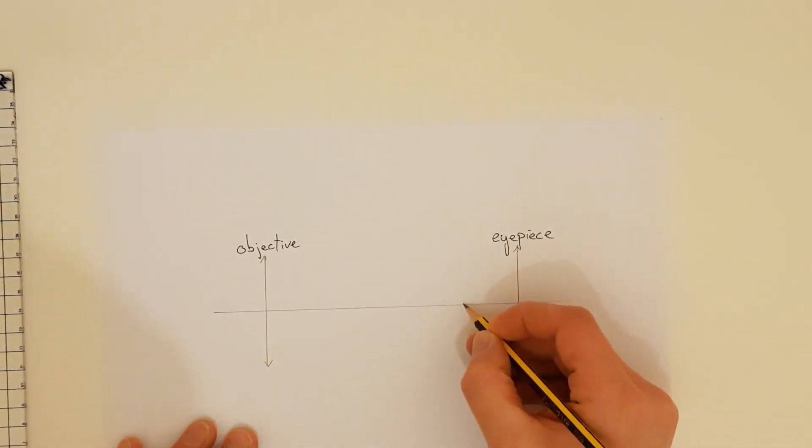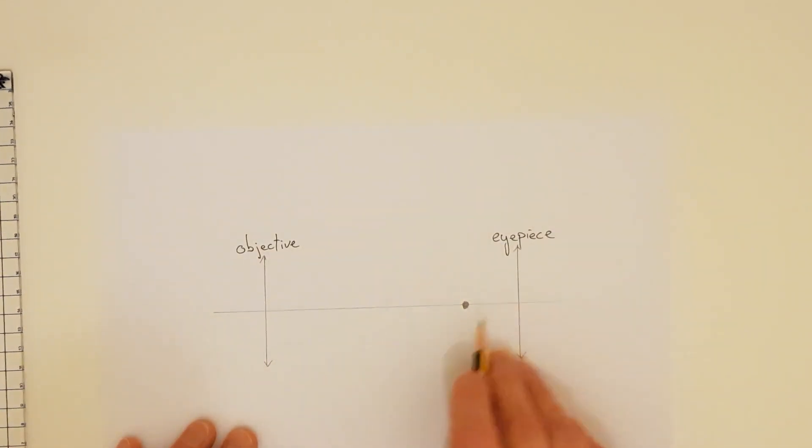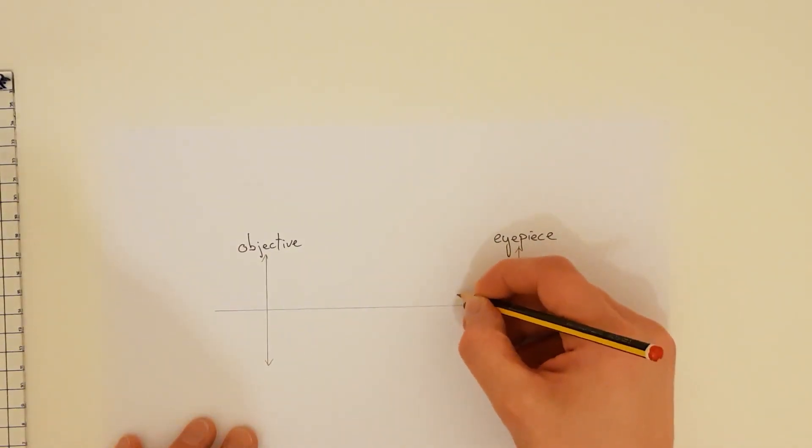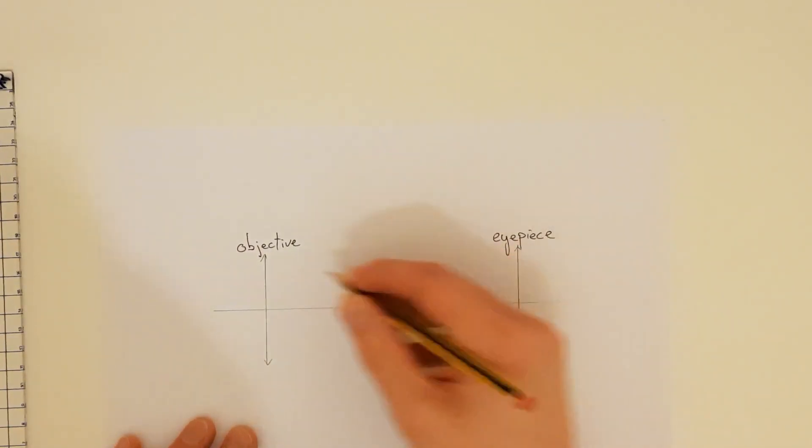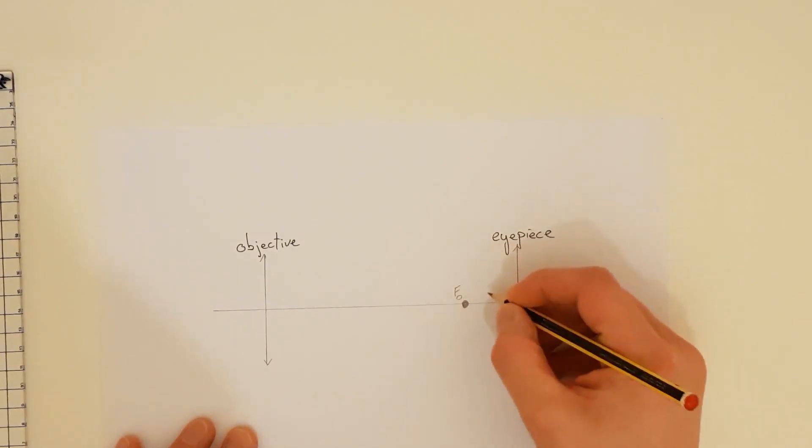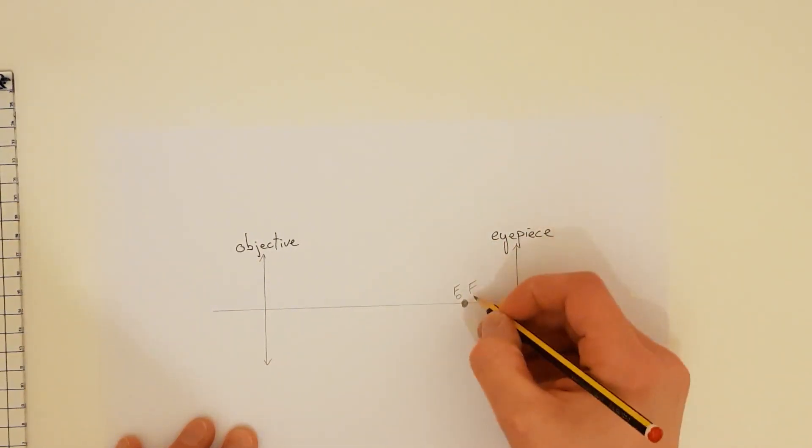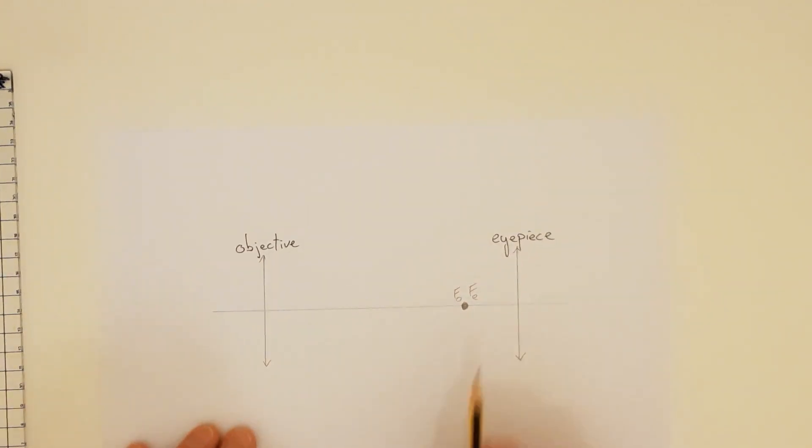I'm going to put my principal focus over here. I'm going to make sure it's clearly marked onto my principal axis and I'm going to label it as well. So it's the focal length of the objective fo and it's also the principal focal length of the eyepiece FE. It's clearly marked. The examiner will be able to see that straight away.